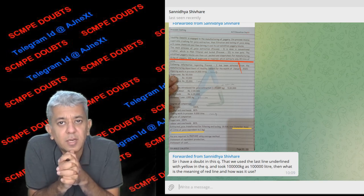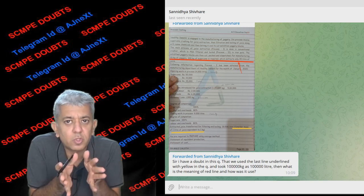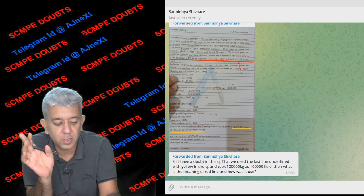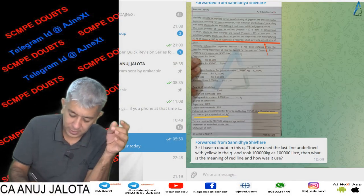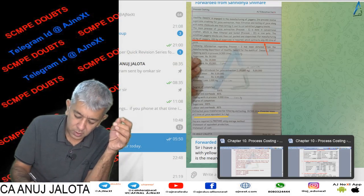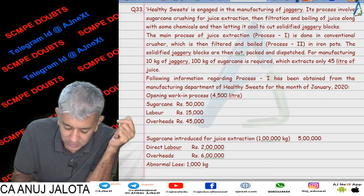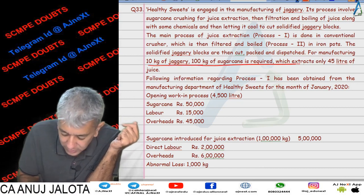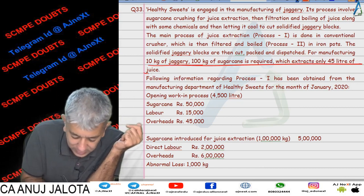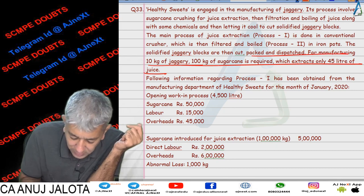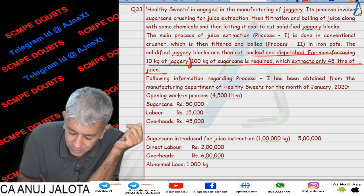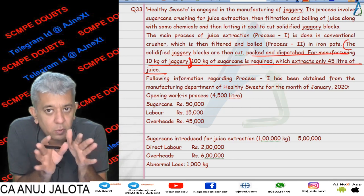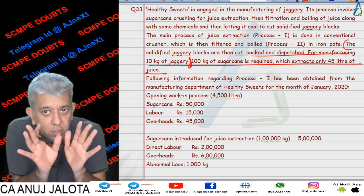Sanitya, this was your doubt regarding one of the questions in the homework section, that is process costing. So that question I am taking up right now. You had asked me: sir, this line that I have underlined in red just now — what is the use of this line? So to understand that, we have to read the question once.